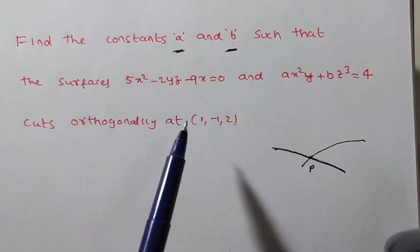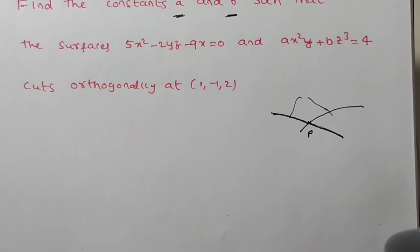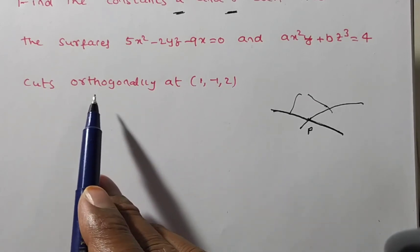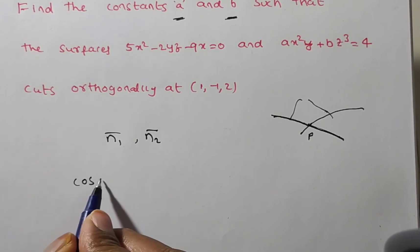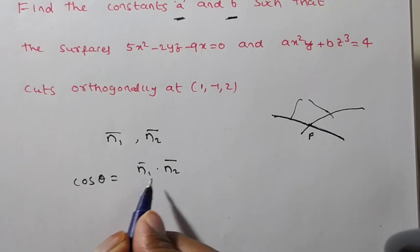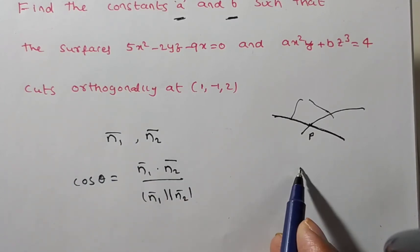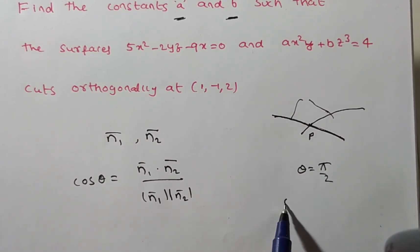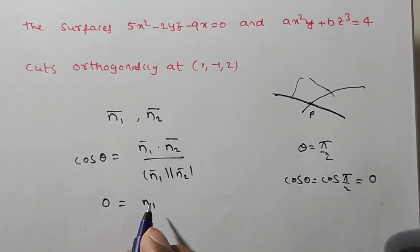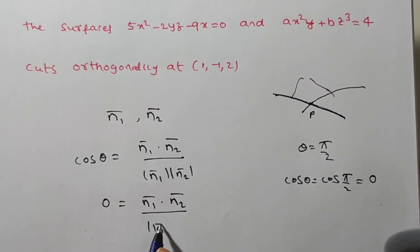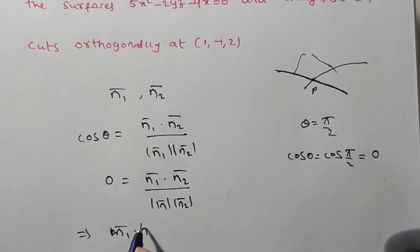When two surfaces cut orthogonally, it means their normals are orthogonal — the angle between them is 90 degrees. The formula for the angle between two surfaces is cos θ = (N1 · N2) / (|N1| |N2|). Since the angle is π/2, cos(π/2) = 0, so the numerator must be zero. That means N1 · N2 = 0.